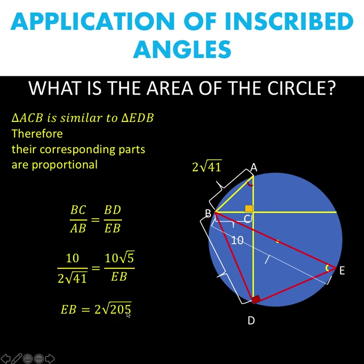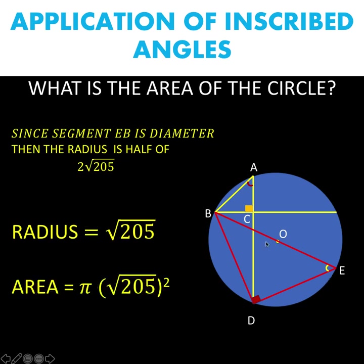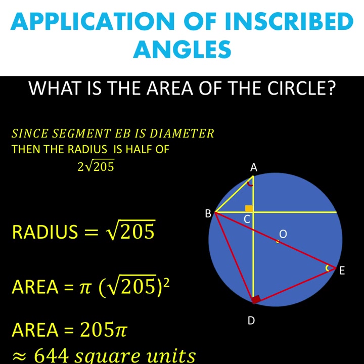The value 2 square root of 205 is the length of the diameter. Dividing by 2 gives us the radius: square root of 205. Once we know the radius, it is straightforward to compute the area of the circle. The area equals pi times radius squared, where our radius is square root of 205. Simplifying, the area equals 205 pi. Therefore, our final answer is that the area of the circle is 205 times pi, which in decimal is approximately 644 square units.